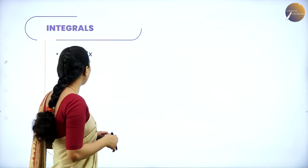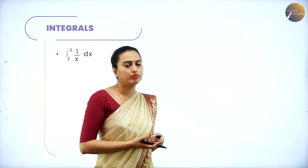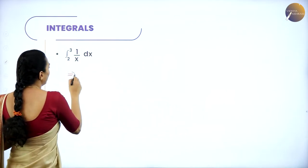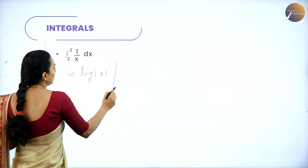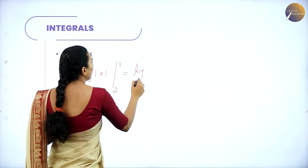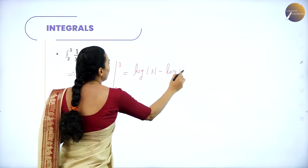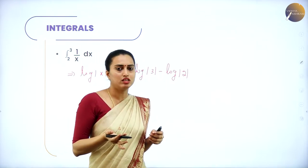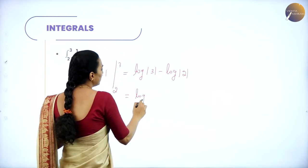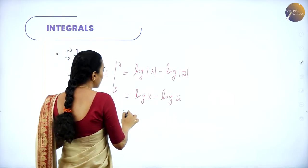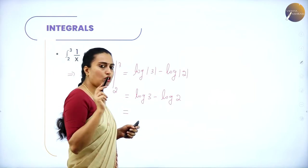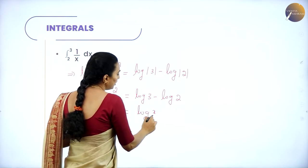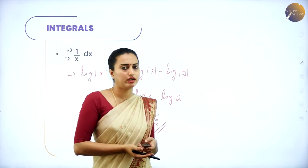The next problem is: integral from 2 to 3 of (1/x)dx. The integral of 1/x is log|x|. So we have log|x| from limit 2 to 3. Applying the upper limit first: log|3| - log|2|. Since x > 0, this becomes log 3 - log 2, which by the log subtraction rule equals log(3/2). This is the final answer.